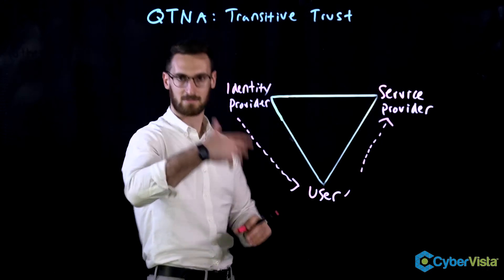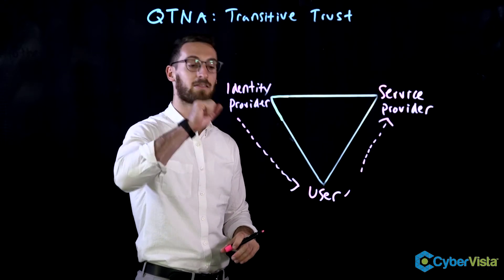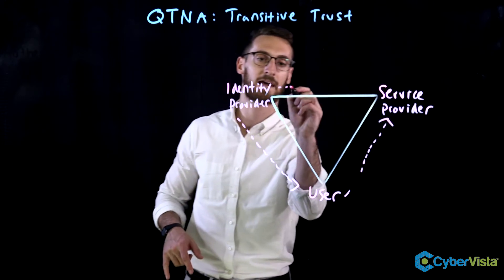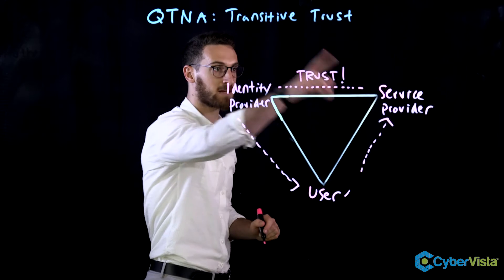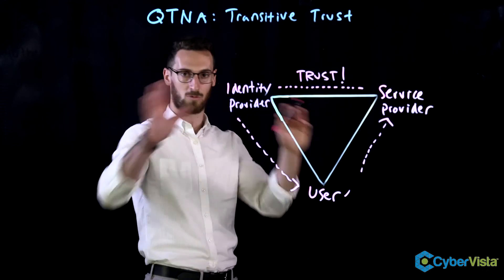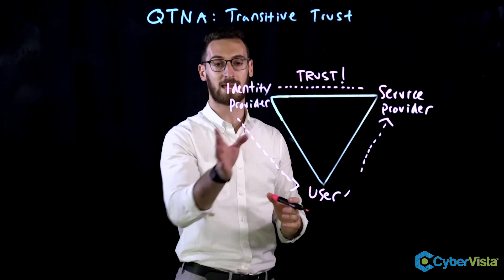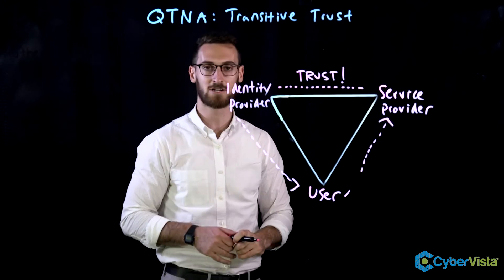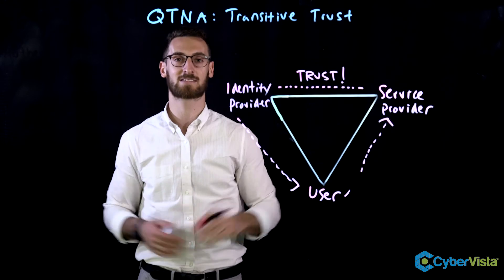The service provider will then allow the user to access resources — but why? Not because they trust the user, but because they trust the token that the user has from the identity provider. So the service provider and the identity provider have a trusted relationship. By transitive property, the service provider can trust the user, because the user was authenticated by the identity provider. The user is not necessarily trusted by the service provider, but the user has been authenticated and trusted by the identity provider. The identity provider and the service provider have a trusted relationship, so the identity provider says this person is good, and the service provider says therefore I will trust the user. That's how transitive trust happens in a single sign-on federated identity environment.